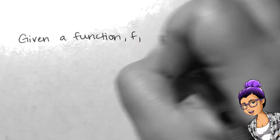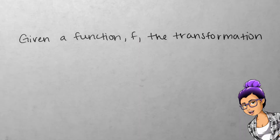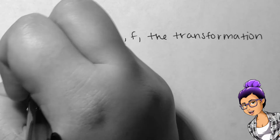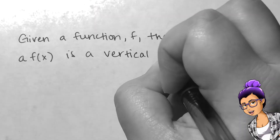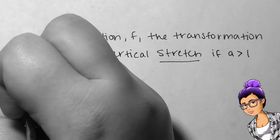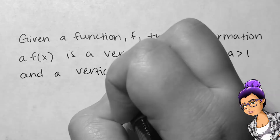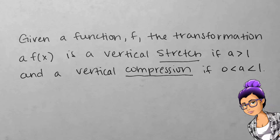In general, given a function f, the transformation a f of x is a vertical stretch if a is larger than 1, or a vertical compression if a is between 0 and 1.